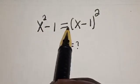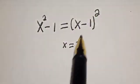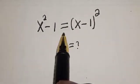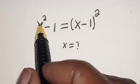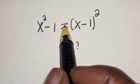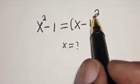x square minus 1 is equal to x minus 1 all square. What is the value of x? Hi everyone, welcome to my class. In this class, we want to find the value of x from this equation: x square minus 1 equals x minus 1 all square.